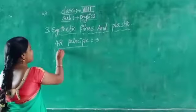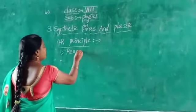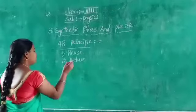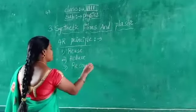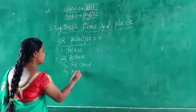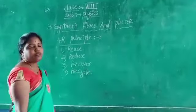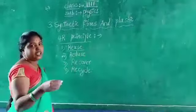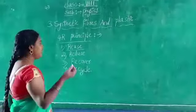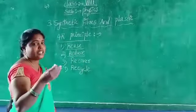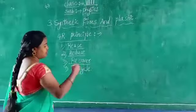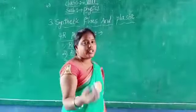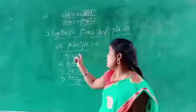What are the 4R principles? First one: Reuse — use again and again. Second: Reduce — decrease the usage. Third: Recover — collect old plastics. Fourth: Recycle — recycle the old plastics again. Now we are going to discuss one by one: how we reuse, how we reduce, how we recover, and how we recycle plastic-based materials.